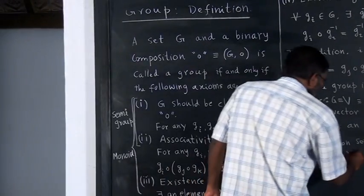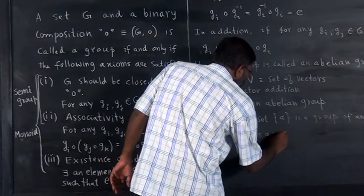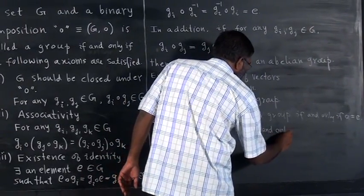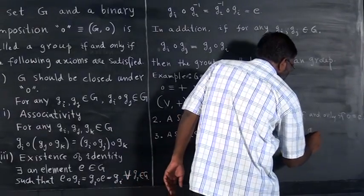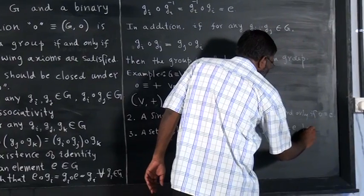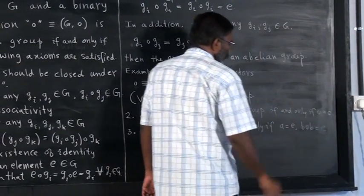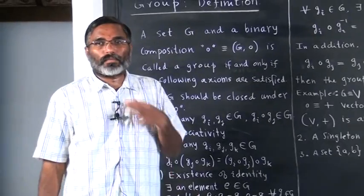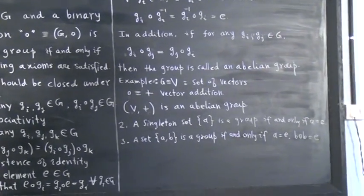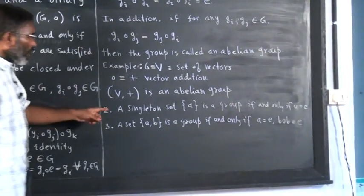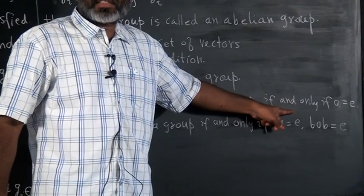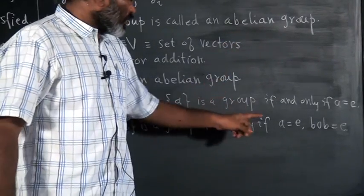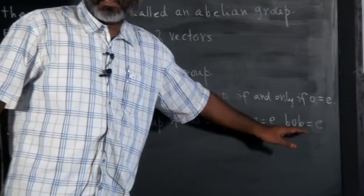So, it is a group if and only if A is identity and B composed B is identity. Under these conditions it will become a group. In this sentence, when I am writing 'if and only if', what does it mean? This is both forward and backward — both necessary and sufficient.